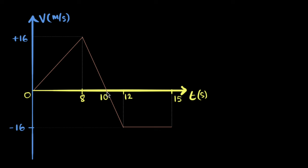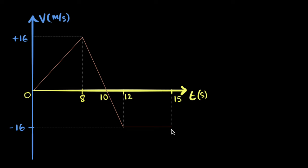That means now the car is speeding up again. The velocity is increasing in the negative direction all the way to minus 16. So it increases in reverse for the next two seconds. And then notice the velocity stays constant — that means the car will keep moving at a constant velocity.